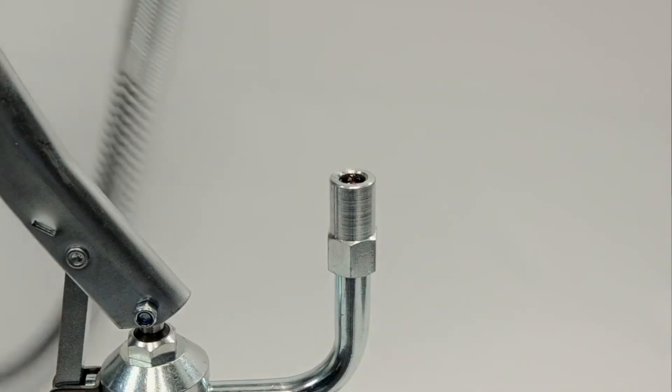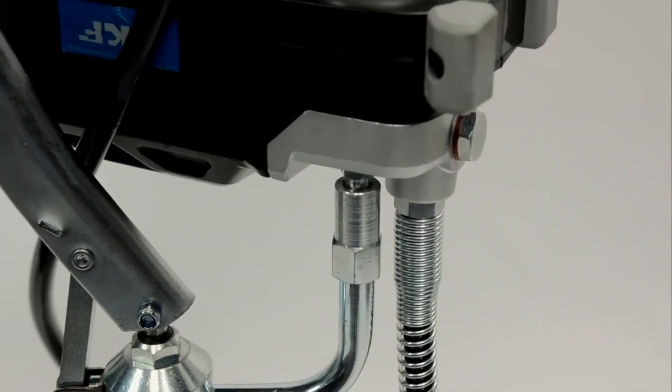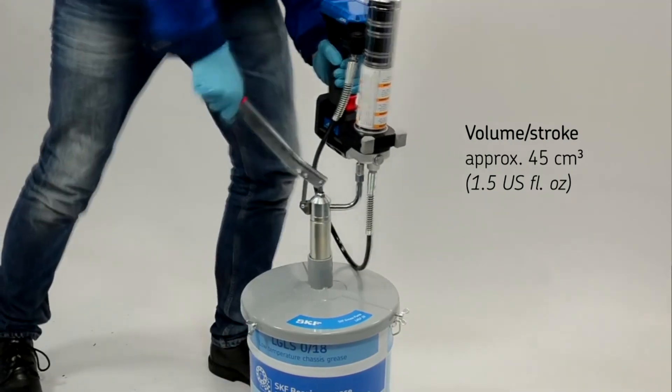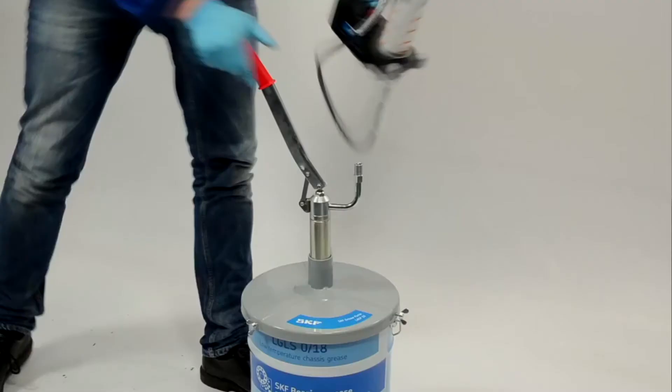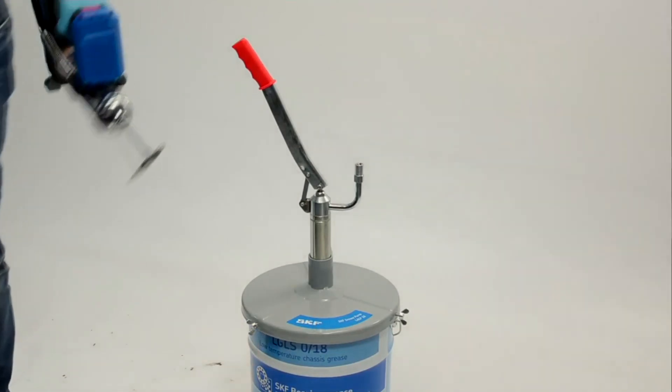Just press the filling nipple into the filling nozzle and start pumping. With a high volume per stroke, the grease gun is quickly filled and is ready for your next lubrication.